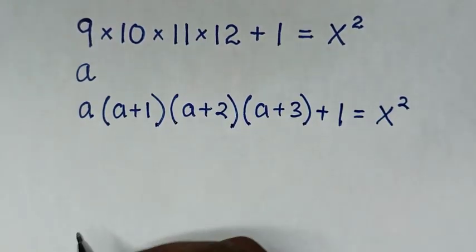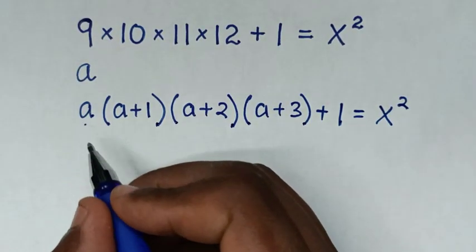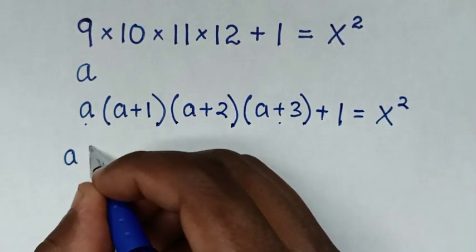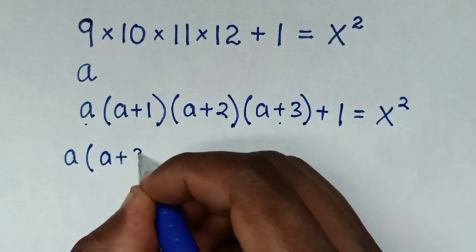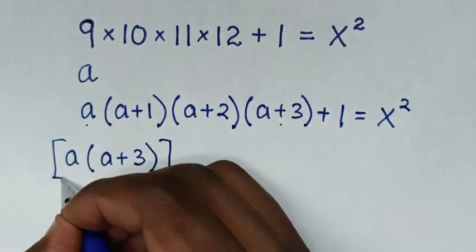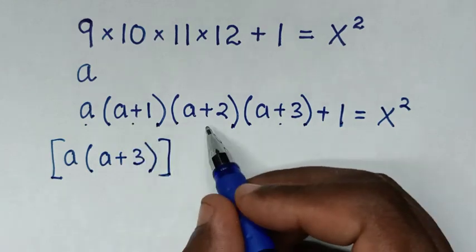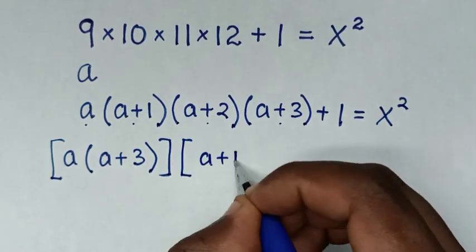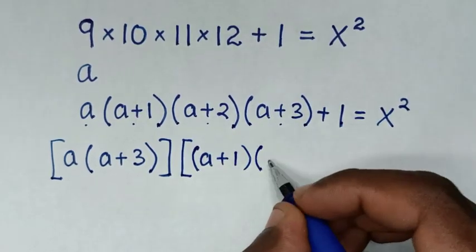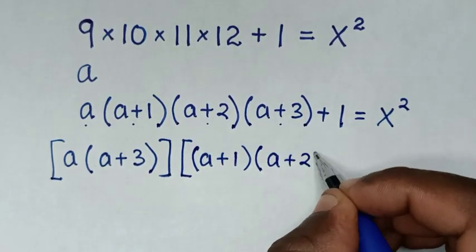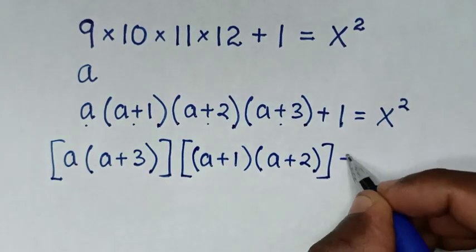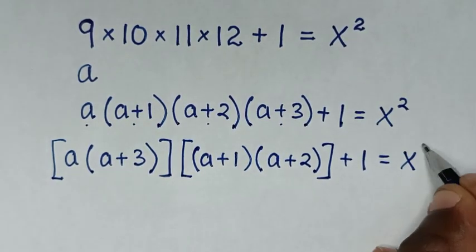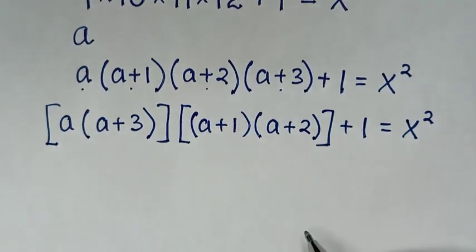Then in the next step, we take a times (a+3), so it will be a(a+3). Then we take (a+1) times (a+2), so it will be (a+1)(a+2). Then plus 1 is equal to x squared.